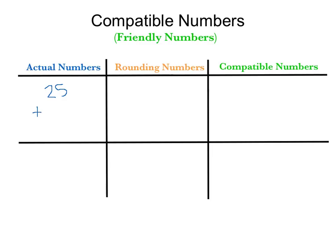So 25 plus 37. Okay, let's go ahead and get the actual answer so we can kind of see the difference here. So 25 plus 37 gives us? 62.